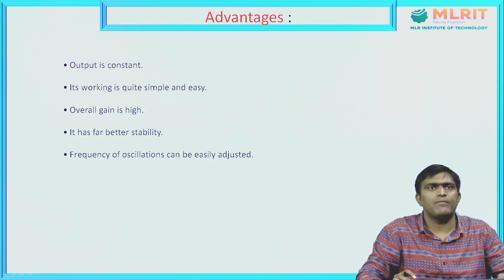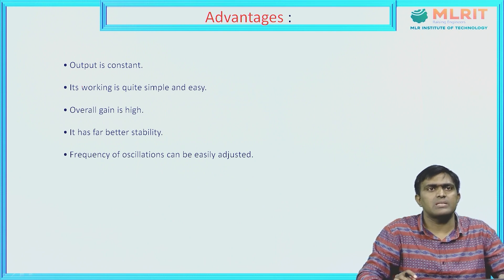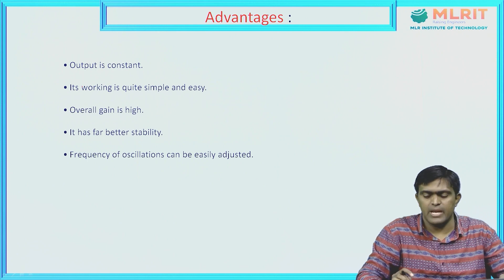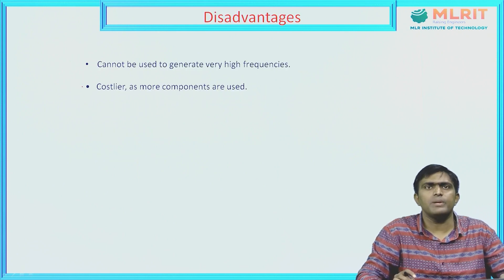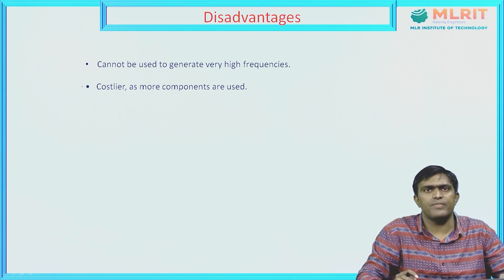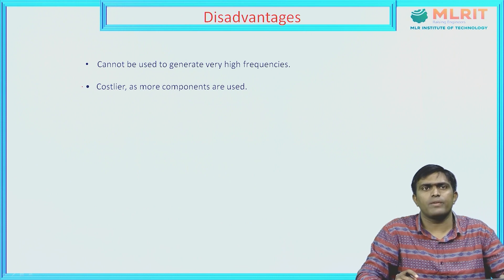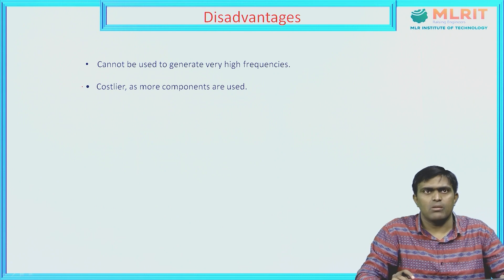Coming to the advantages: the output is constant, working is quite simple and easy, and the overall gain is high. It offers far better stability and the frequency of oscillation can be easily adjusted. For the disadvantages: it cannot be used to generate very high frequencies because it is mainly used for low frequency signals, and as more components are used, it is somewhat costlier.